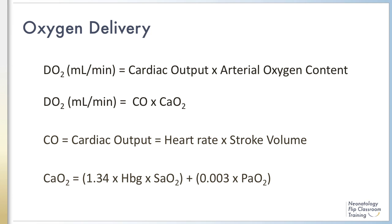Oxygen delivery is determined by the cardiac output and the arterial oxygen content. Otherwise stated, both the flow of blood and the amount of oxygen in that blood are factors in delivery. Let's break down this equation.